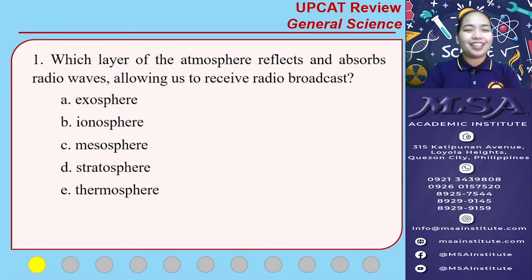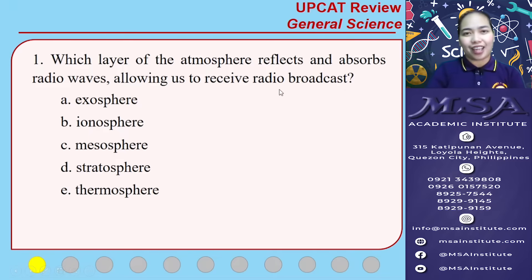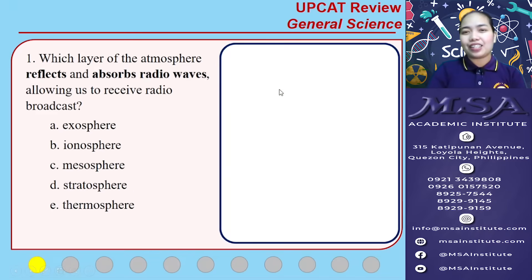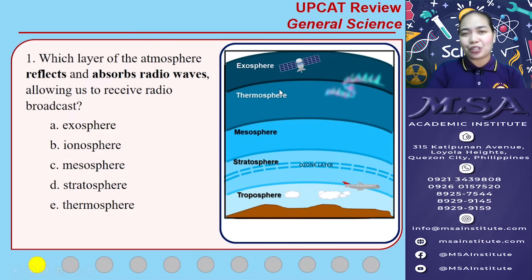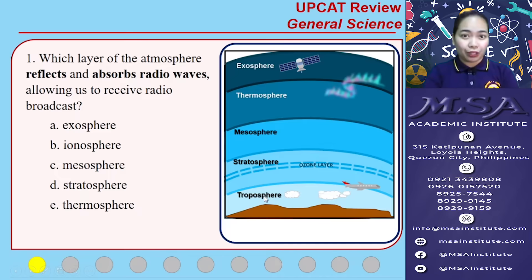Number one: which layer of the atmosphere reflects and absorbs radio waves, allowing us to receive radio broadcasts? First, let's take a look at the layers of the atmosphere. We have the troposphere, which is the innermost layer of the atmosphere where weather disturbances occur.